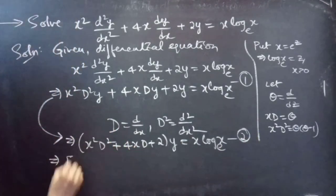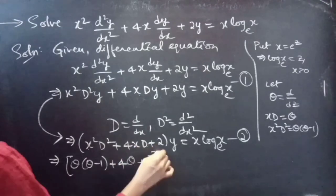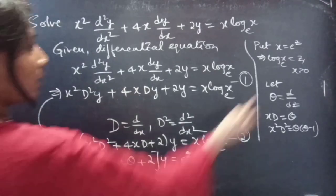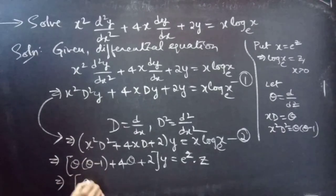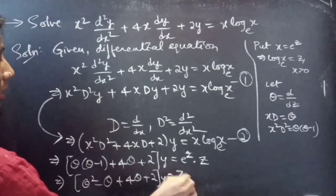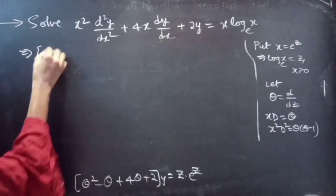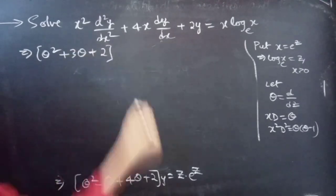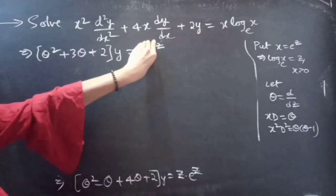Equation 2 becomes: replace x²D² by θ(θ−1), replace xD by θ, and replace x by e^z and log x by z. This gives θ(θ−1) + 4θ + 2 into y = z·e^z. Expanding: θ² − θ + 4θ + 2 = θ² + 3θ + 2. So the equation becomes (θ² + 3θ + 2)y = ze^z. This is the operator form: F(θ)·y = ze^z.